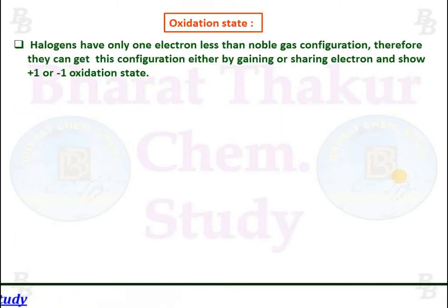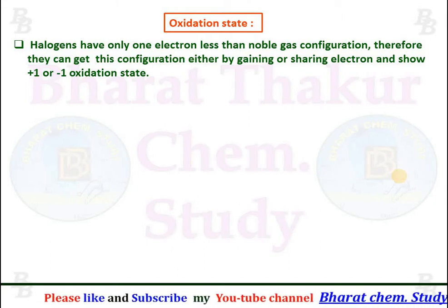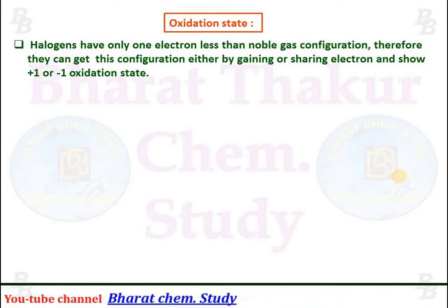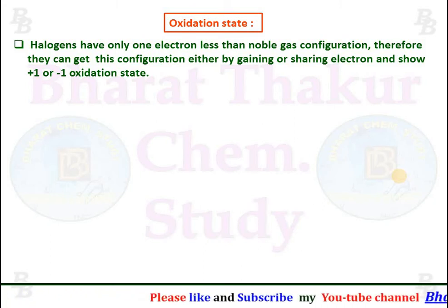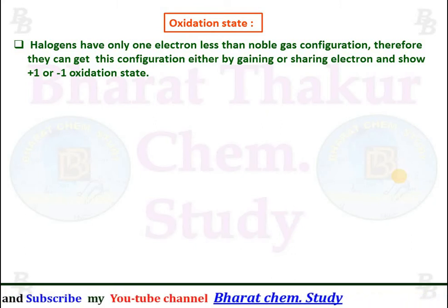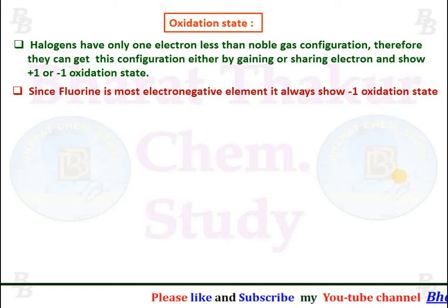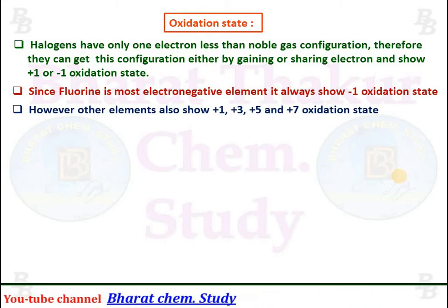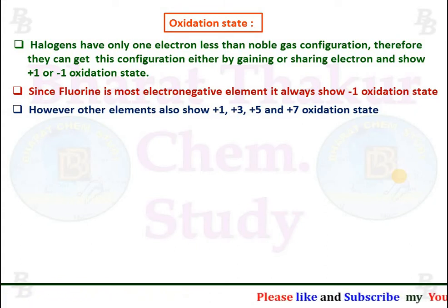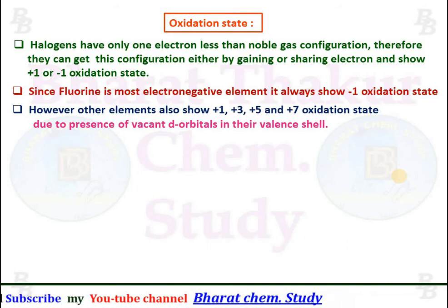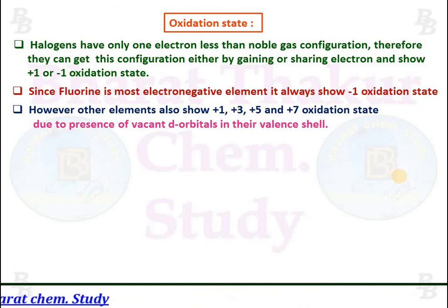Oxidation state: halogens have only one electron less than noble gas configuration, so they can get this configuration either by gaining or sharing an electron, and show oxidation states of +1 or -1. Since Fluorine is the most electronegative element, it always shows a -1 oxidation state. However, other halogens also show +1, +3, +5, and +7 oxidation states due to the presence of vacant d orbitals in their valence shell.